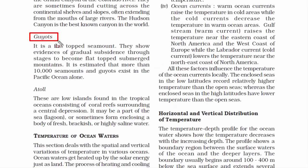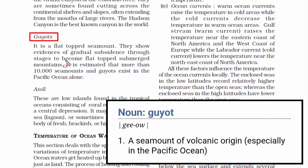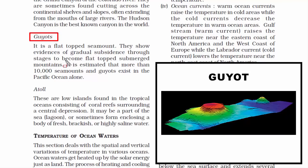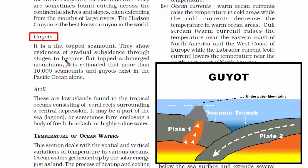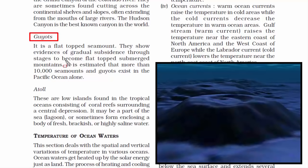The fourth minor ocean relief feature is a guyot — an undersea mountain, basically a sea mount with a flat top. Since it is a type of mountain, it is of volcanic origin. Guyots are usually found in deep ocean basins. The top portion is flat because erosion by waves destroys the top of the sea mount, resulting in a flattened shape. Guyots are most commonly found in the Pacific Ocean, standing at least 3,000 feet above the sea floor with a flat top diameter of at least 660 feet.